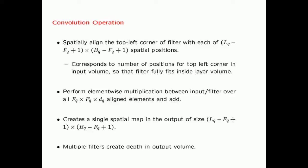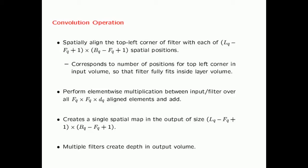To get multiple spatial maps in a hidden layer, you use multiple filters, each creating one output map and adding depth to the output volume. The more filters you use, the higher the capacity of your model, because you catch a larger number of features in your input volume.